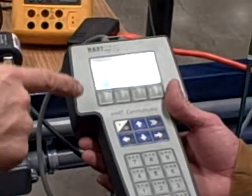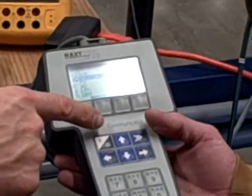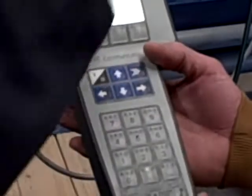So we're going to use the 275 HART communicator to do a zero sensor trim on a Rosemount 3051 differential pressure transmitter.